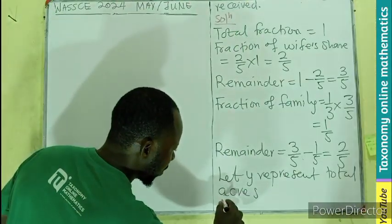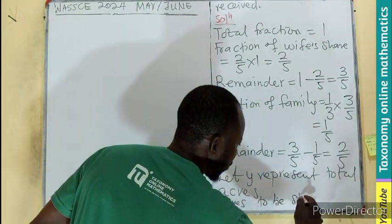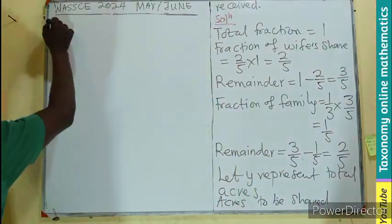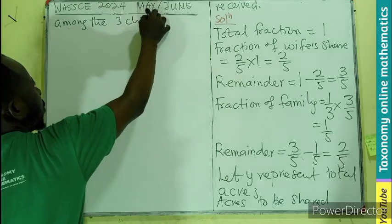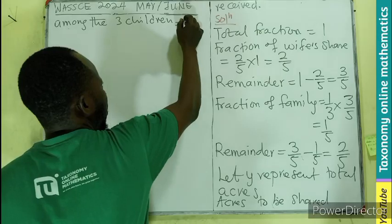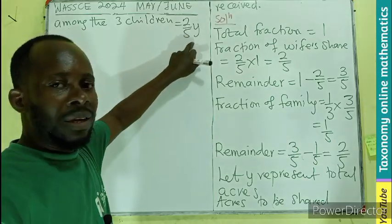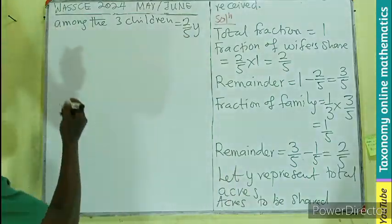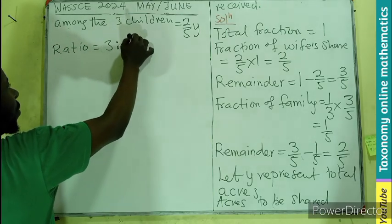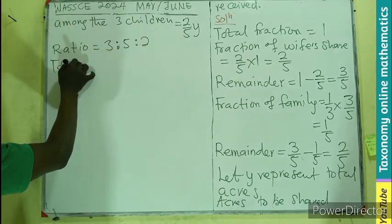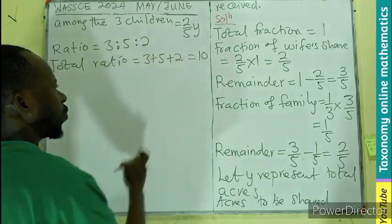We can say that acres to be shared among the three children is going to be two-fifths of the total. This is what they are going to be sharing. So in this total, that is what they are sharing in the ratio. We know their ratio is going to be three is to five is to two. What do you think is the total ratio? Which is going to be three plus five plus two equals ten.